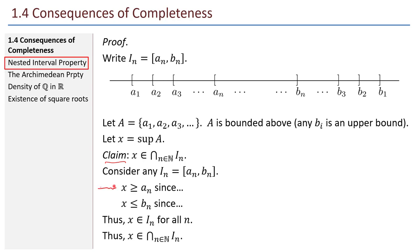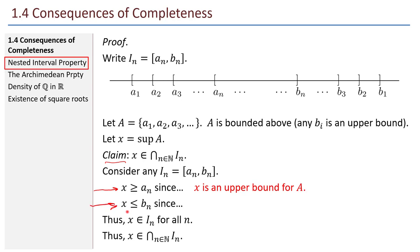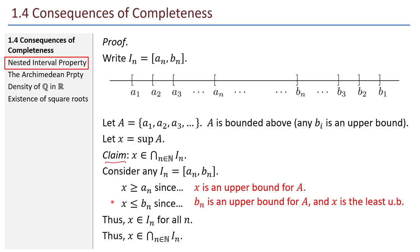It only remains to give the two justifications. x ≥ aₙ because x is defined as the least upper bound of A, so certainly it is an upper bound. And x ≤ bₙ because bₙ is an upper bound for the entire set A, and x is the least upper bound of A, so x ≤ bₙ. With those two lines complete, that completes the proof.